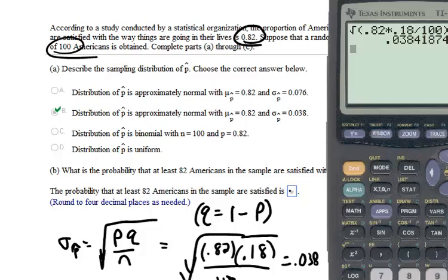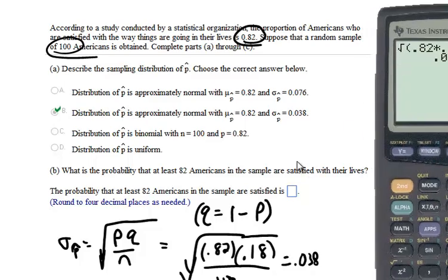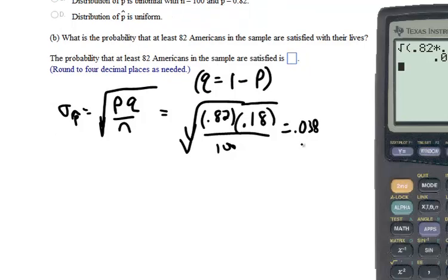Part B. What is the probability that at least 82 Americans in the sample are satisfied with their lives? Always draw a curve on these, every single time. This is really the same thing as a problem from 8.2 in this text where we're looking at proportions. The big difference is that I'm generally not given the standard deviation. I actually computed what I did here.